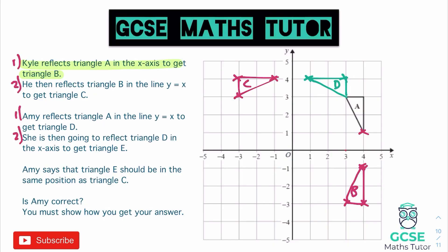We've got one more reflection to do. Amy reflects triangle D in the x-axis to get triangle E. Starting with the bottom right corner of triangle D — that's three away, so 1, 2, 3 lands on this triangle. The next one is four away, down to here, and the final point, which is also four away, gets us to there. Joining that up — that is triangle E. As we can see, they are not in the same position. So: is Amy correct? No, she is not — and we've shown how we got our answer by labelling it all on the diagram.